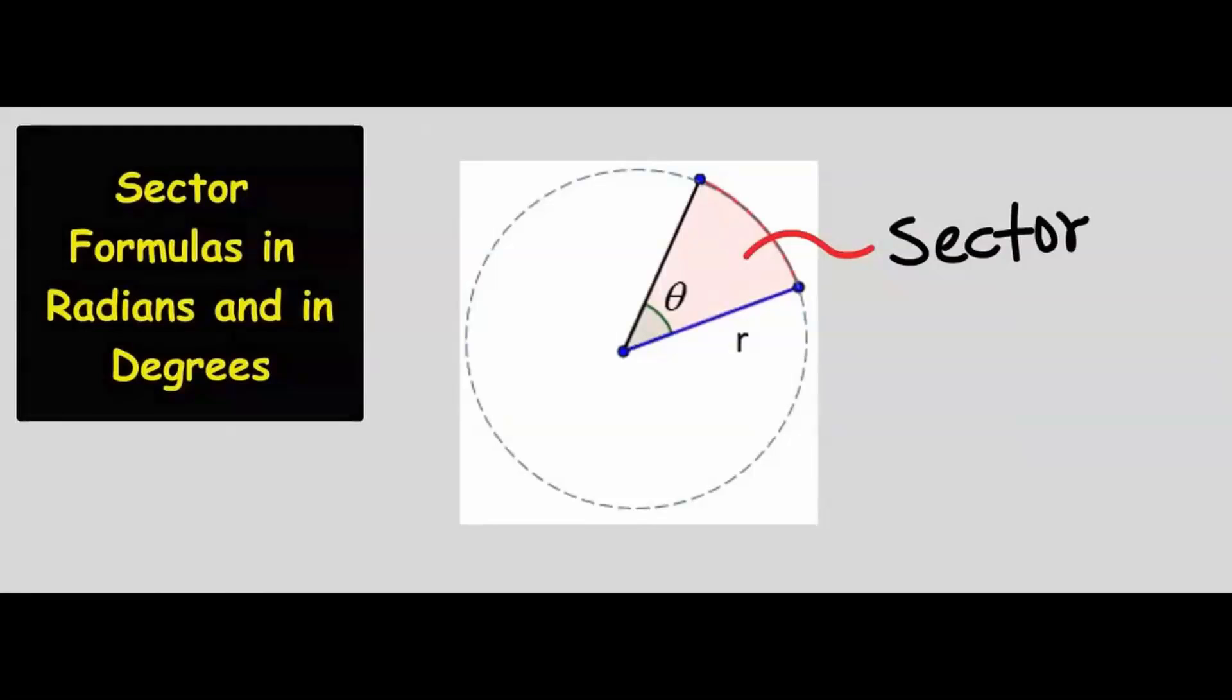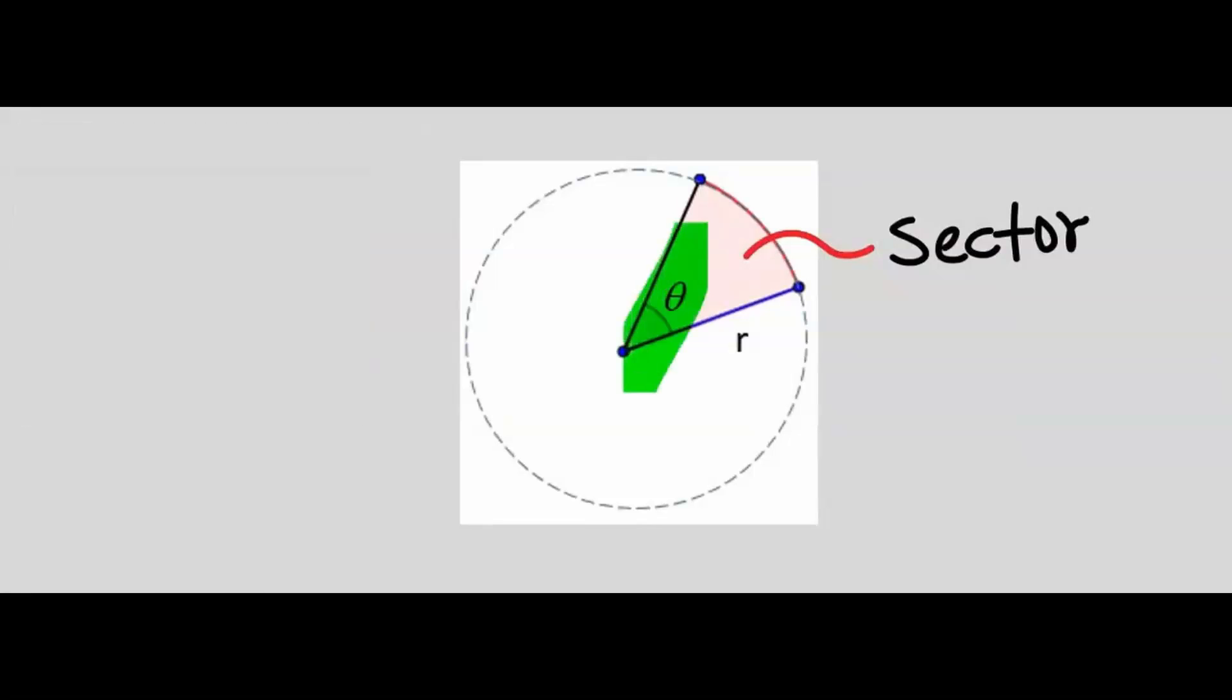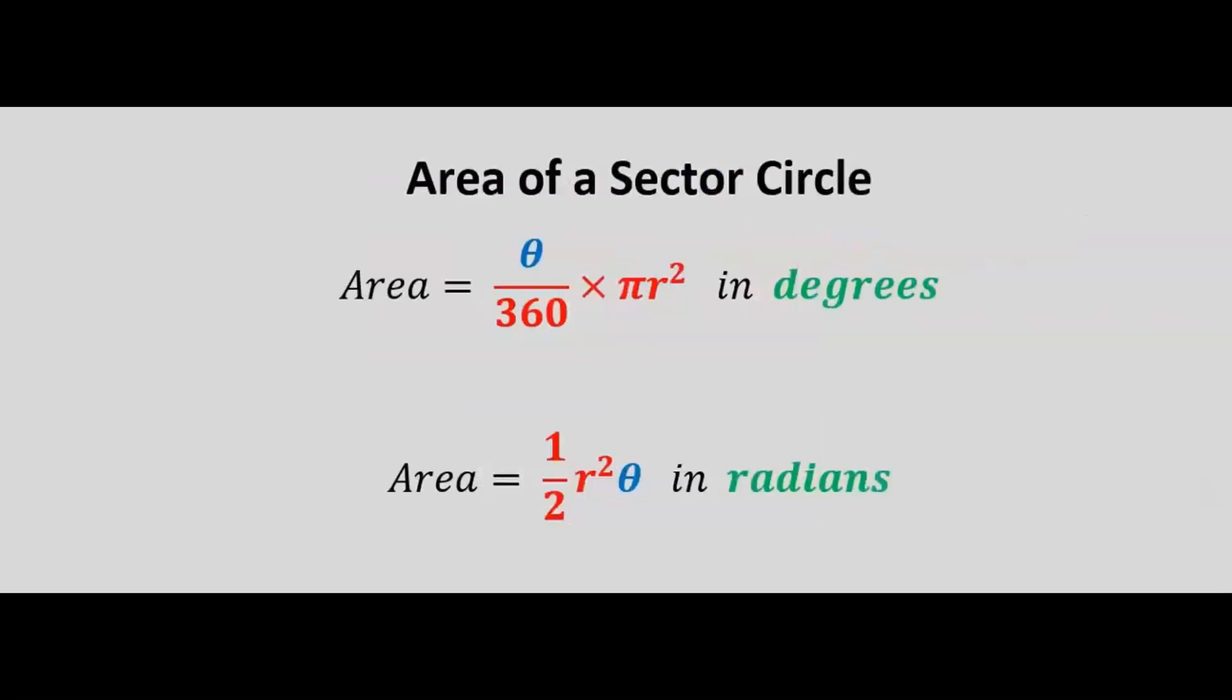Consider a sector. If the angle at the center is in degrees, then the area of the sector will be the area of the circle multiplied by the ratio of the angle to 360.